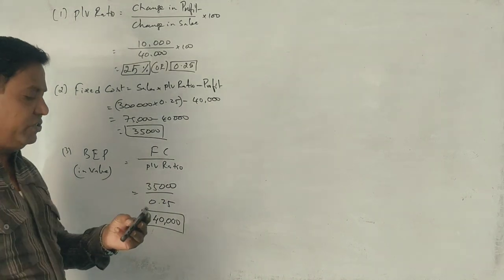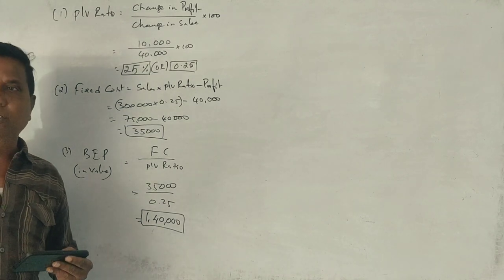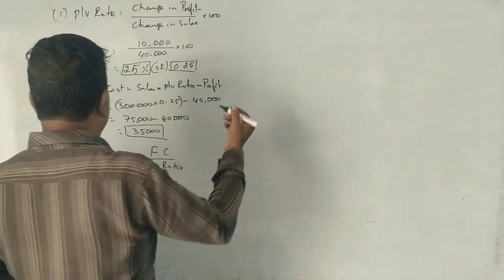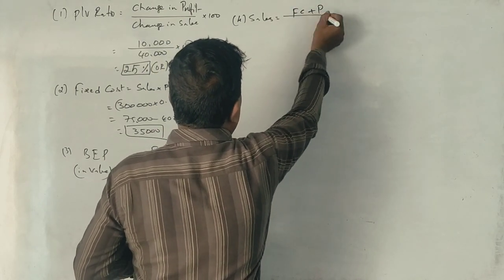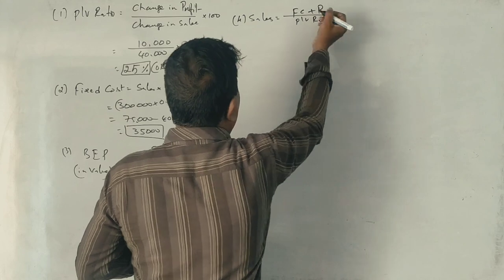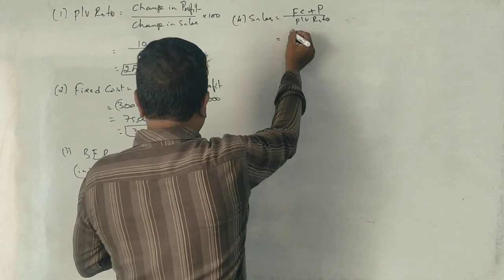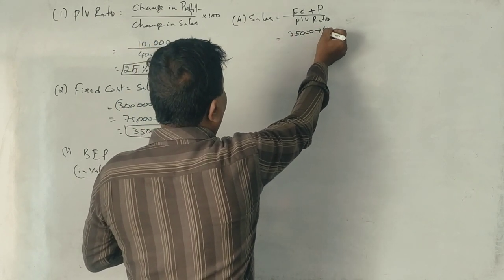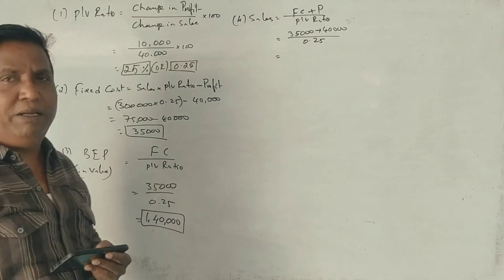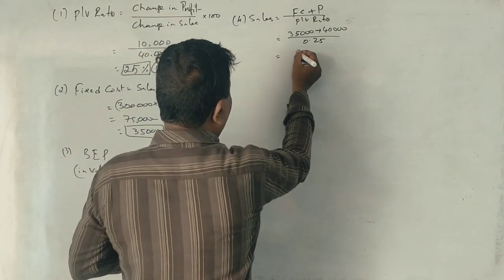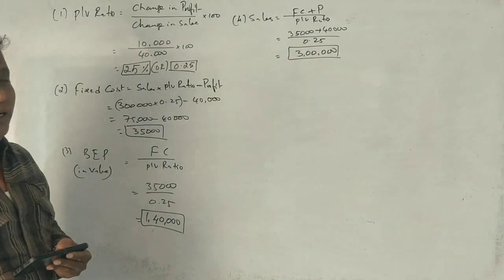Next question, what is the sales amount when he requires a profit of 40,000 rupees? Sales equals fixed cost plus profit divided by PV ratio. Fixed cost is 35,000, profit required is 40,000, PV ratio is 0.25. So 75,000 divided by 0.25 equals 3 lakhs.